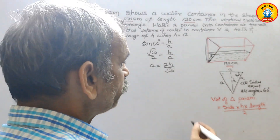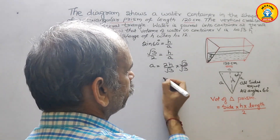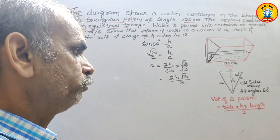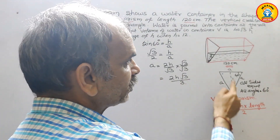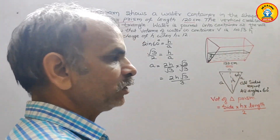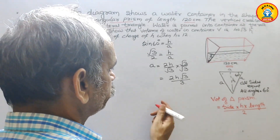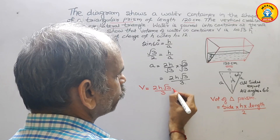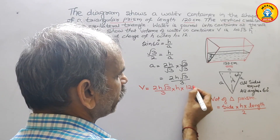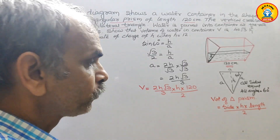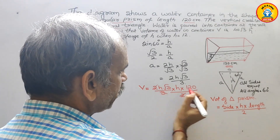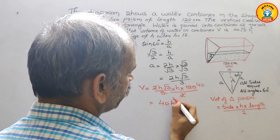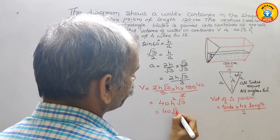Now rationalize A = 2h / √3 by multiplying by √3 / √3, giving A = 2h√3 / 3. Now for the volume: side A = 2h√3 / 3, height = h, and length = 120. So volume = (2h√3 / 3) × h × (120 / 2). Simplifying: 2 and 2 cancel, 3 into 120 gives 40. So volume = 40 × h² × √3, or 40√3 h².